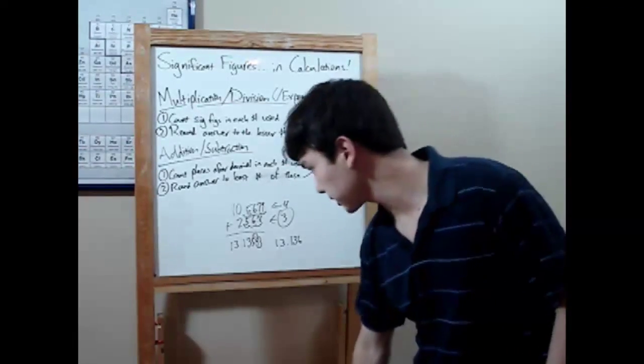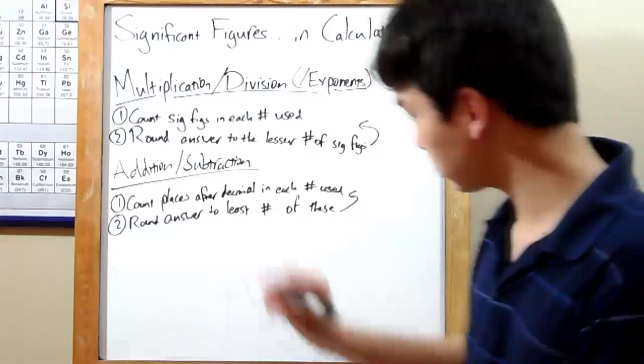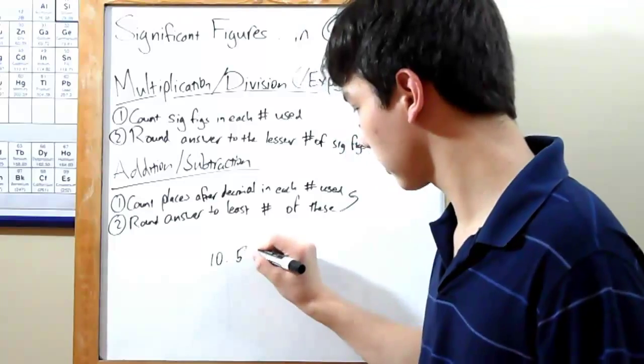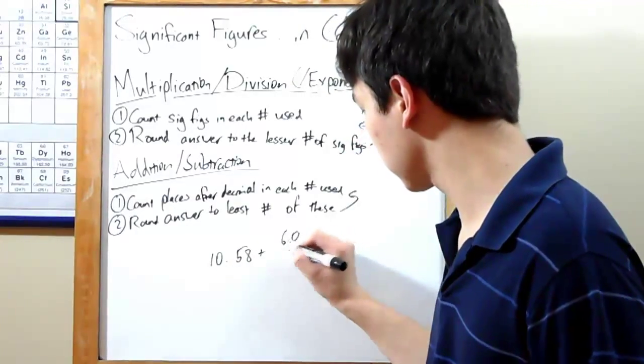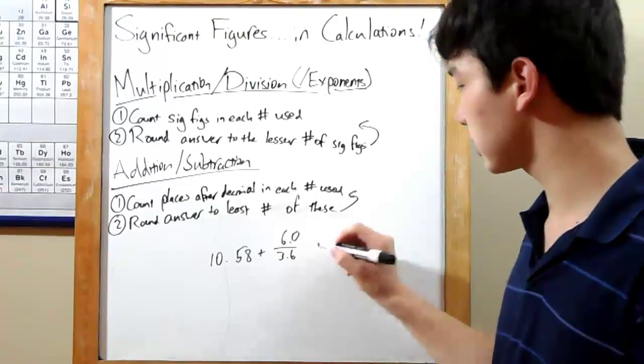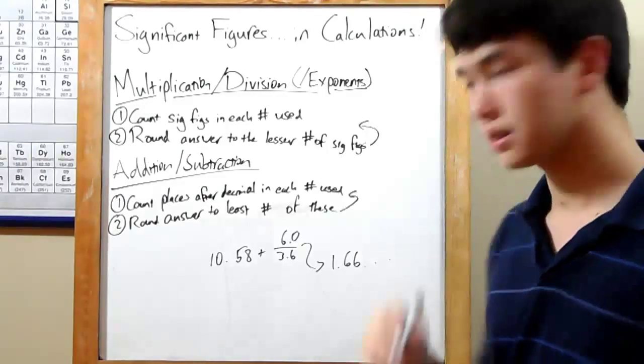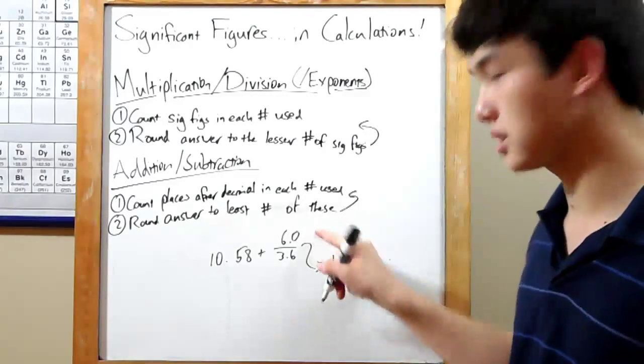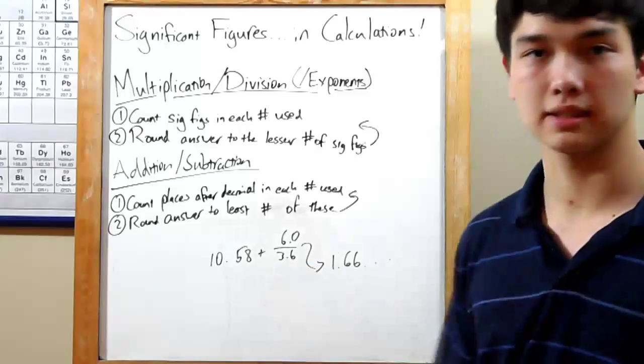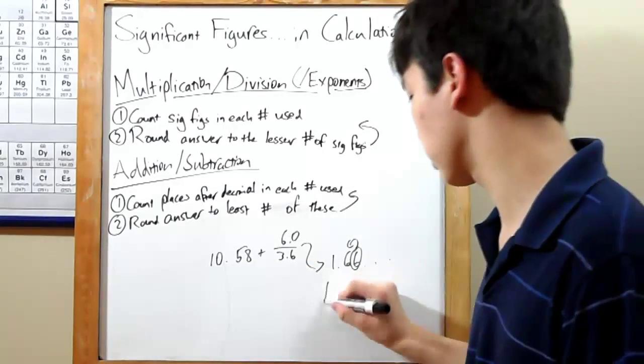Now one last example that will combine all of these rules. 10.58 plus 6.0 over 3.6. Well, order of operations, division comes first. 6.0 over 3.6 will give you 1.6 repeating. Keep sig figs in mind. 6.0 is two significant figures, 3.6 is two significant figures. Easy. Round to two significant figures, and you'll get 1.7.